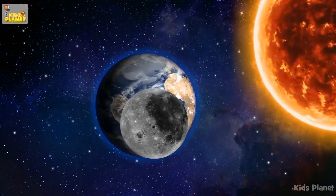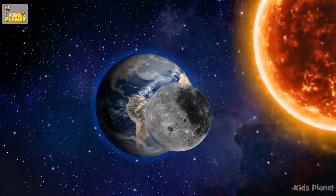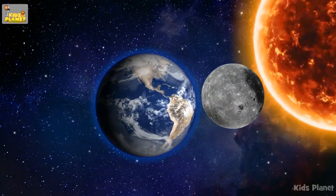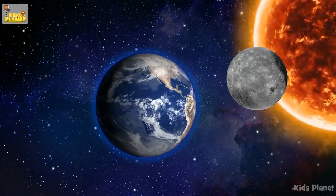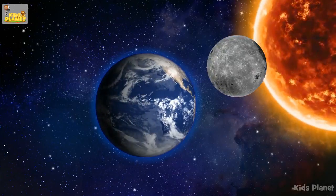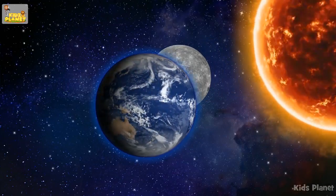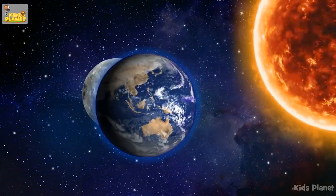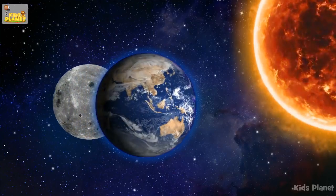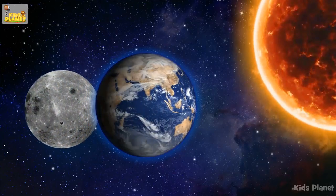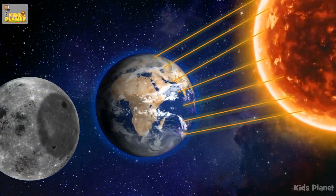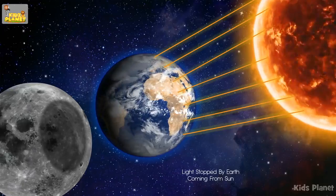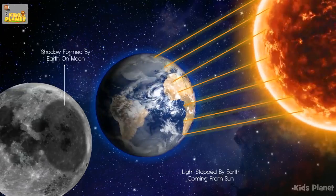You must have experienced or heard of eclipses. An eclipse is a shadow formed in space that makes the sun or moon invisible for some time. For any eclipse to occur, the sun, moon, and earth have to be in a straight line.